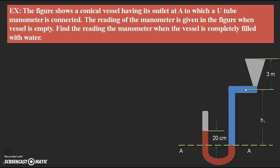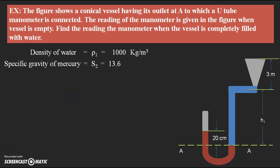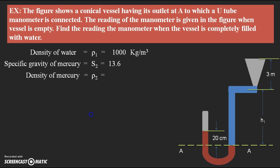The right limb of the manometer contains water as the liquid. The density of water, which I am taking with suffix 1, is 1000 kg per meter cube. Similarly, we need the density of mercury, which can be determined from its specific gravity of 13.6. Since mercury is the second liquid, we use S2 = 13.6, and density of mercury equals 13.6 × 1000 = 13600 kg per meter cube.